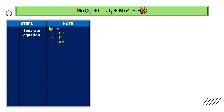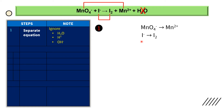Then we separate this equation into two half equations. MnO4⁻, the partner is Mn2+, so we write like this. I⁻, the partner is I2, so we write like this. This first equation is a reduction reaction, because the oxidation number of manganese in MnO4⁻ is positive seven, while in Mn2+ it is positive two. When positive seven is reduced to positive two, this is a reduction reaction.